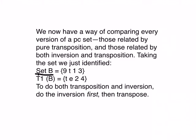If we transpose it by the interval 1, that means we're adding 1 to each of these numbers around the clock face. So now 9 transposed by 1 becomes 10, 10 becomes 11, 1 becomes 2, 3 becomes 4.